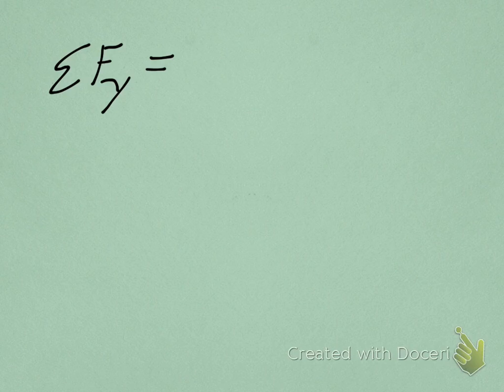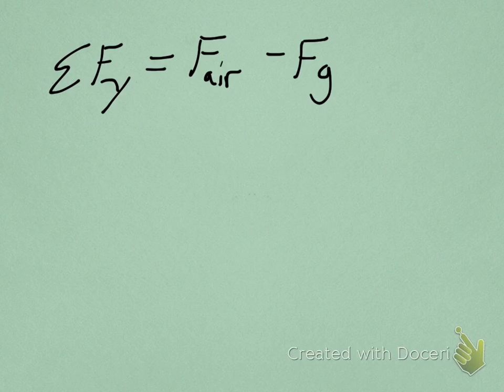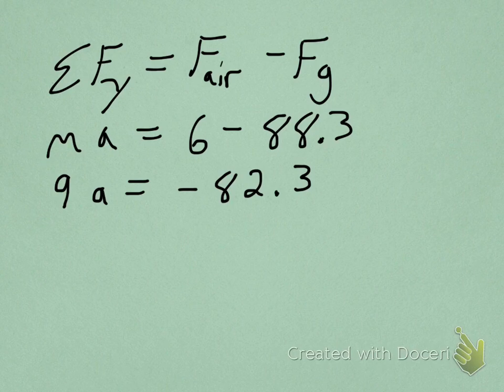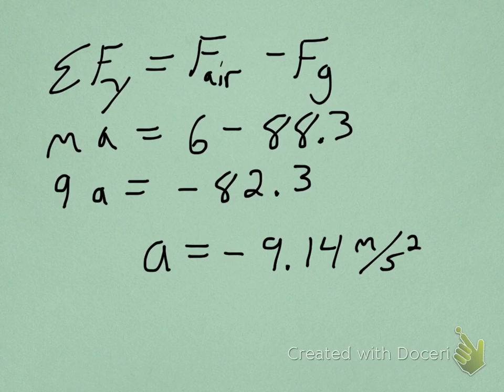Net force in the Y is top minus bottom, so F air minus Fg. Replace net force with Ma. So now we have top is six minus bottom is 88.3. 9A equals negative 82.3. When you solve for acceleration, you get negative 9.14 meters per second squared. So this is a little bit less than gravity, it's a little bit less than the last problem, because you have a force from the air that's going up opposing it. So it's kind of like slowing down the acceleration from gravity.